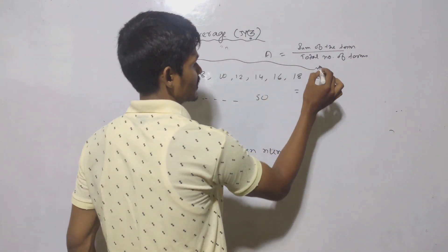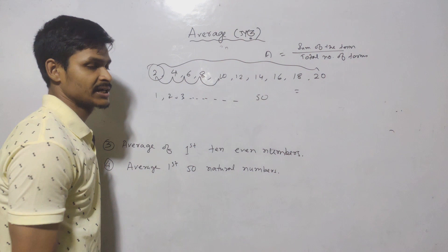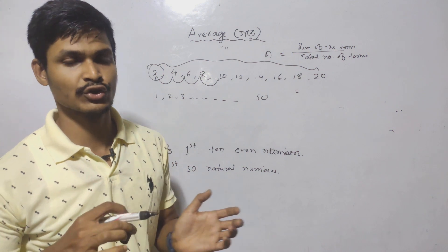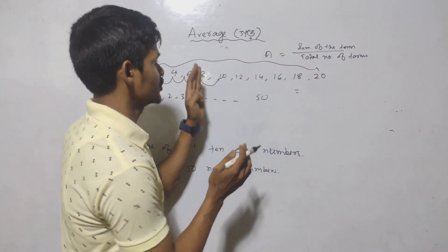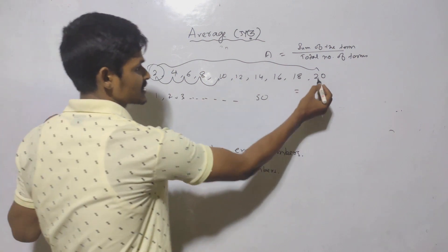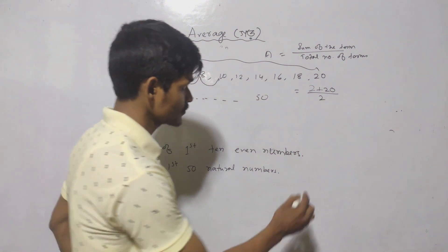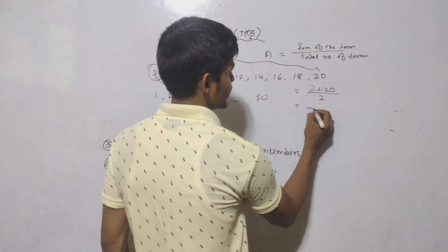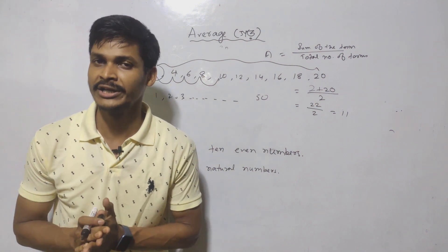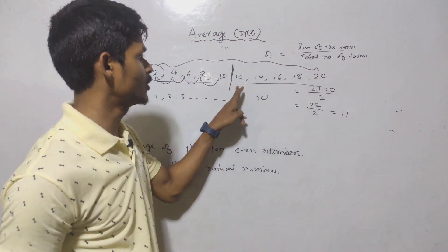What is the average? The shortcut trick is: add the first number and the last number, then divide by 2. This works because the gap between consecutive numbers is the same — the numbers are consecutive with equal spacing — so the middle value is the average. Using the formula: 2 plus 20 divided by 2 equals 22 divided by 2 equals 11. The average is 11, which is the middle value.